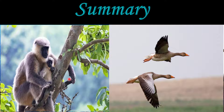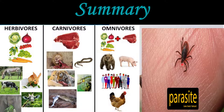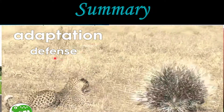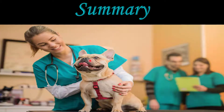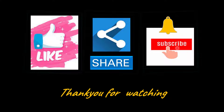Animals are also categorized on the basis of what they eat, into four types: herbivorous animals that depend on plants, carnivorous animals that depend on other animals, omnivorous animals that eat both, and parasites that live on the bodies of other animals and suck their blood. After this we talked about adaptations in animals for protection and defense, and also about taking care of animals and being concerned about them. Thank you for watching — please like, share and subscribe to my channel, and don't forget to press the bell icon to get the latest updates.